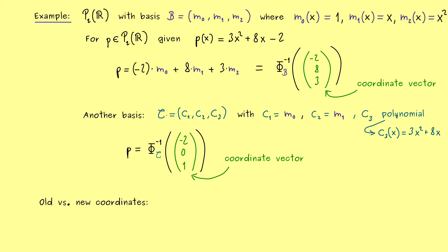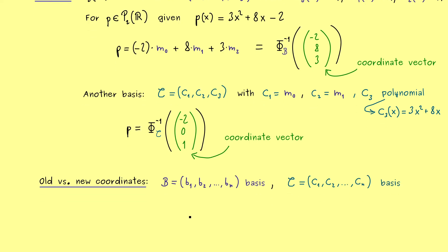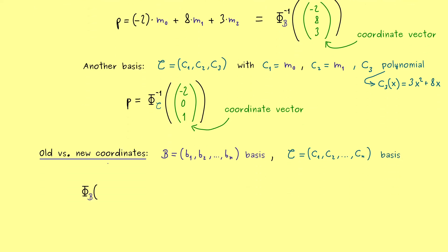So we could call the coordinates with respect to B the old coordinates and the coordinates with respect to C the new coordinates. So you see what we need here are the two bases B and C. And moreover we need the knowledge that both can represent an abstract vector v.